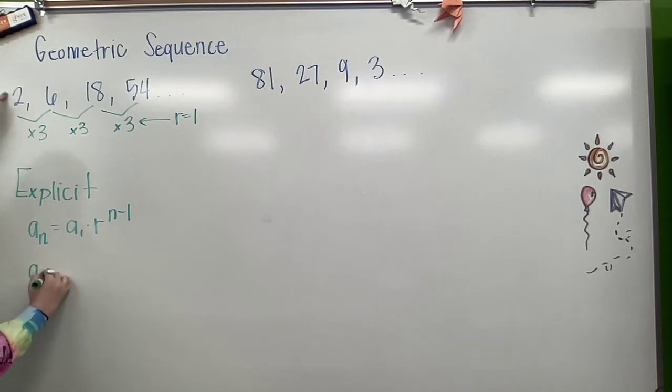I'm going to have a sub n equals 2, my first term, times 3, my r, raised to the n minus 1.